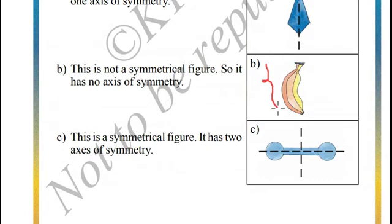In example B, there is a banana. Let us draw an axis. This cannot be the axis of symmetry because when you fold this figure, it won't match.